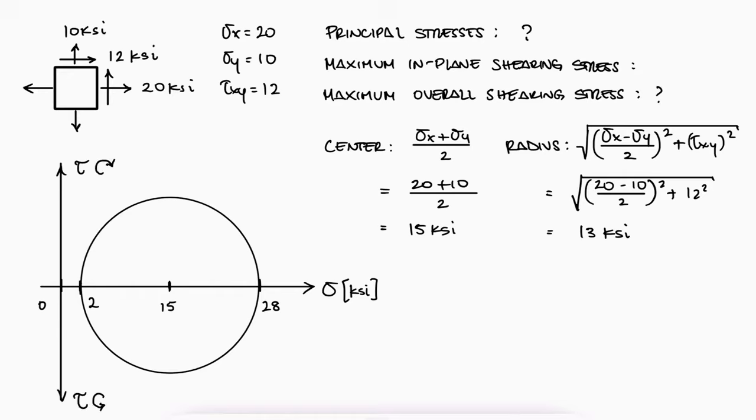The maximum in-plane shearing stress is the radius of the circle, and by knowing that sigma z is zero, and therefore that principal stress must be zero, we find a Mohr's circle that encompasses both that has a radius of half its diameter of 28.